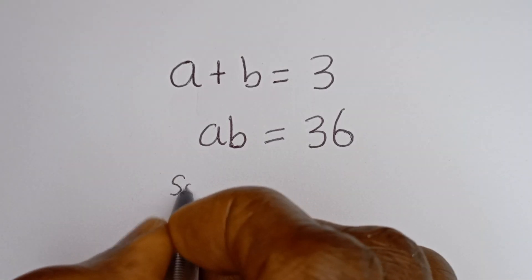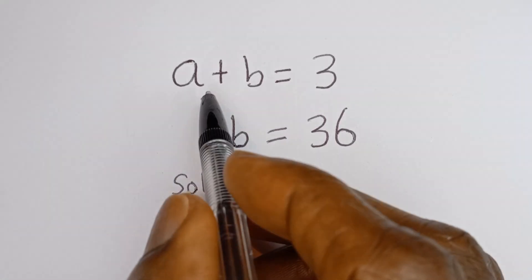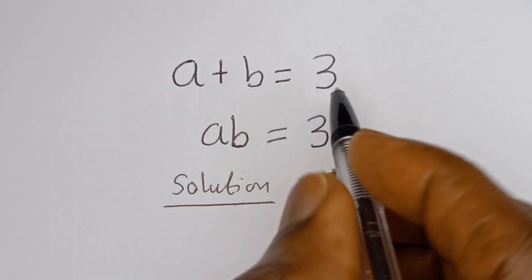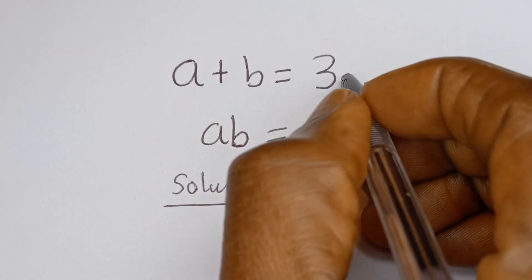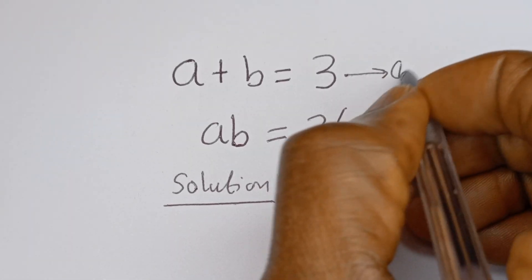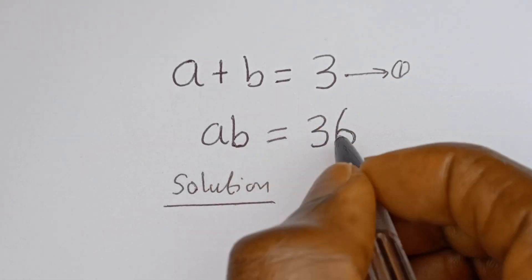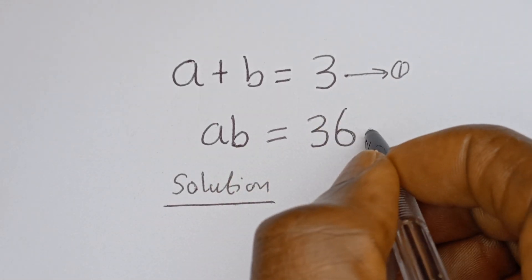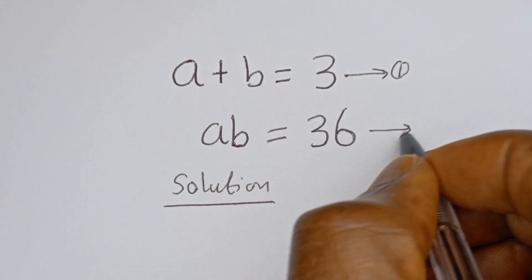Solution. A plus B is equal to 3 — this is equation 1. AB is equal to 36 — this is equation 2.